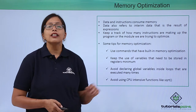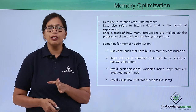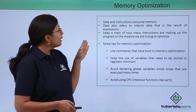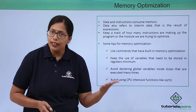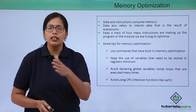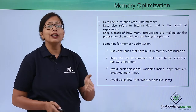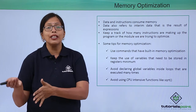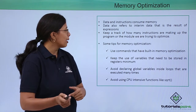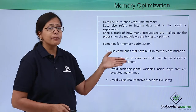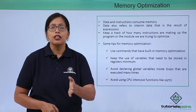Now let's move to memory optimization. Data and instructions both consume memory because they have to be saved there. Data here also refers to interim data generated when a process is in its execution phase. You should always keep track of how many instructions and how much interim data make up your program. Here are some tips for memory optimization: use commands that have built-in memory optimization.